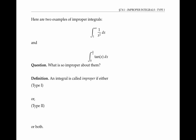What makes these integrals improper? In the first example, it's the infinity in the bound of integration. In the second example, it's the fact that the function tan of x itself goes to infinity on the interval from zero to pi over two, where we're integrating.